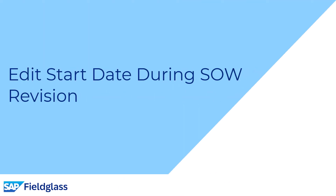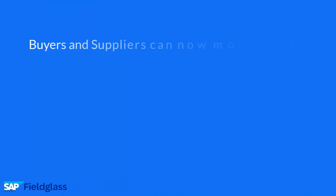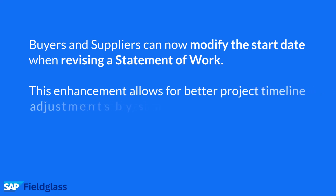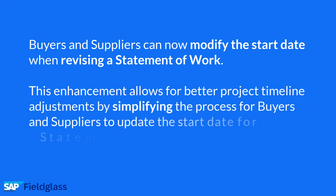Going on to another self-service innovation: Edit Start Date During SOW Revision. Buyers and suppliers can now modify the start date when revising a Statement of Work. This enhancement allows for better project timeline adjustments by simplifying the process for buyers and suppliers to update the start date for statements of work.